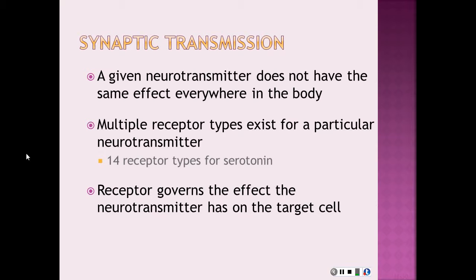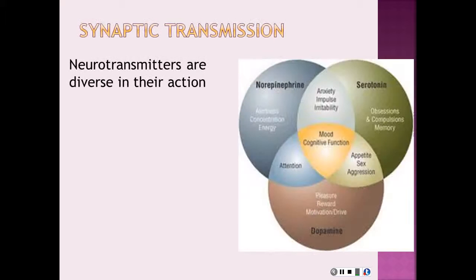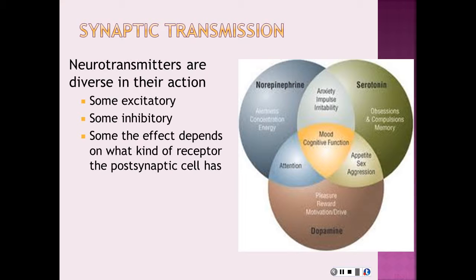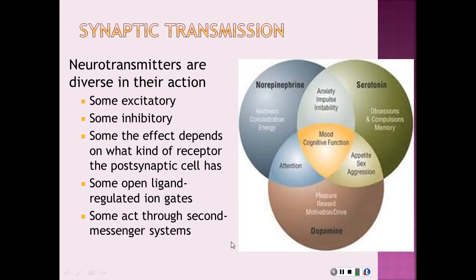A receptor governs the effect the neurotransmitter has on that particular cell. Neurotransmitters are diverse in their action: some are excitatory, some inhibitory, and for some the effect depends on what kind of receptor the postsynaptic cell has. Some hold ligand-gated ion channels, and some act through second messenger systems. Ligand-gated ion channels refer to a group of transmembrane ion channel proteins which open to allow certain ions through.